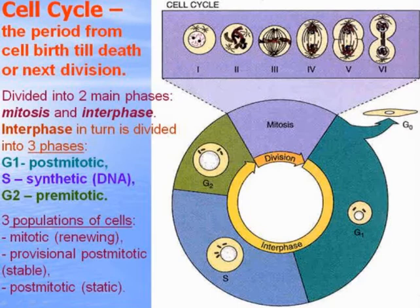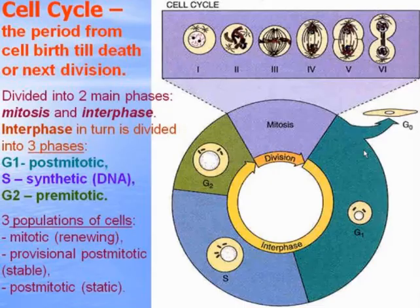Third population: post-mitotic or static population. These cells appeared — usually during embryogenesis before birth of the human — and they never divide. They grow, differentiate, and carry out specific functions. This population includes nerve cells and cardiomyocytes.